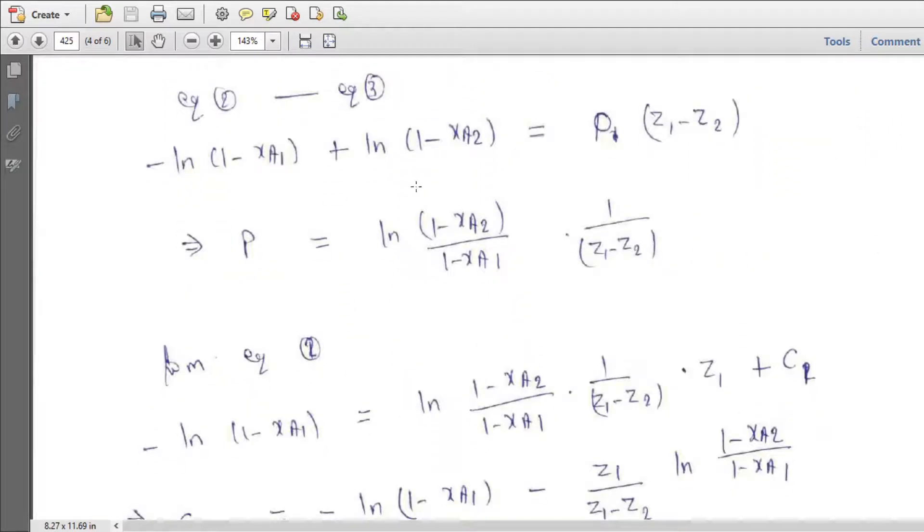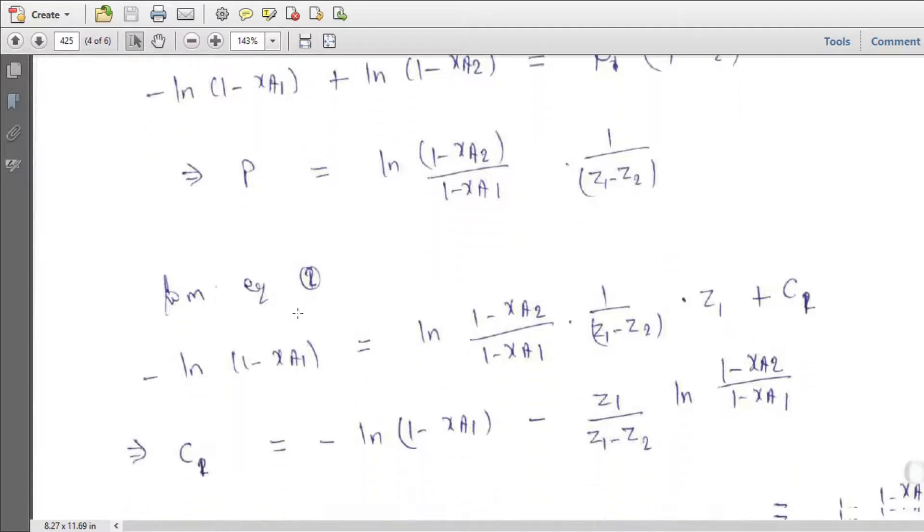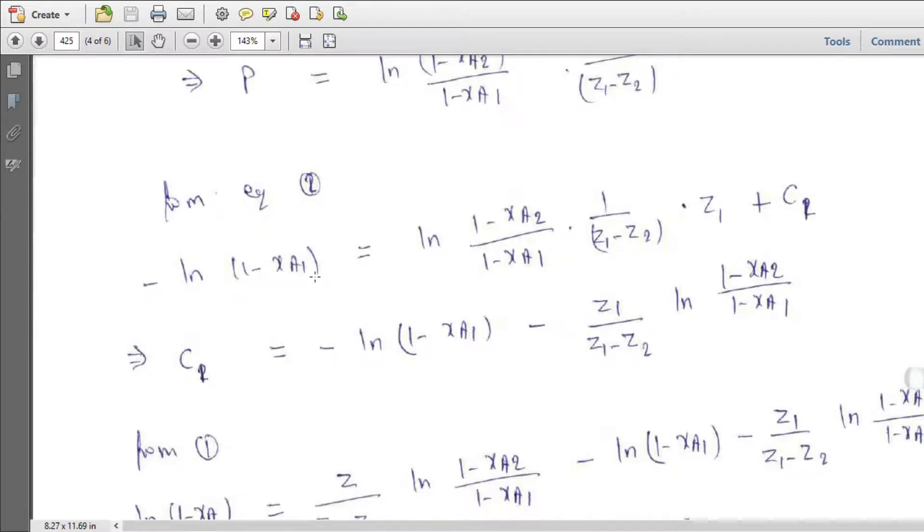Equation 2 minus 3, so we will get the expression for P is ln 1 minus XA upon 1 minus XA1, multiply by 1 upon Z1 minus Z2. Now from equation 2, we can substitute this expression of P there. So we will get P equal to this expression here. The constant here you have.